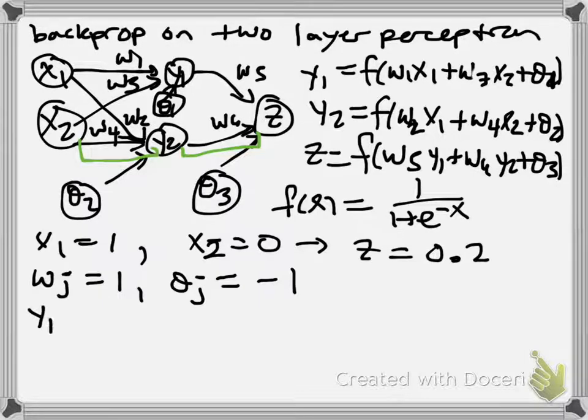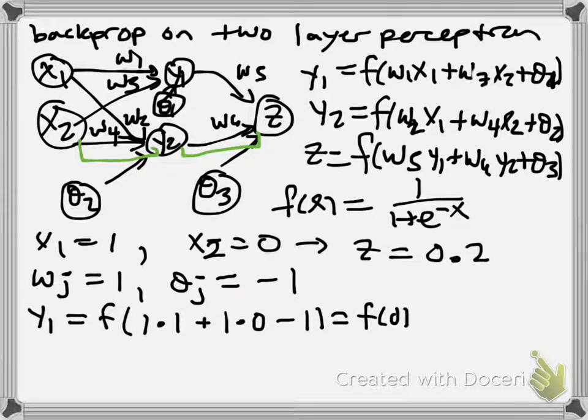So the first thing we'll do is just forward propagate in order to see what our current error is. So in this case, we have f of just 1 times 1, plus 1 times 0, minus 1. That's going to give us f of 0, which is going to be 1 over 1 plus e to the minus 0, which is just a half or 0.5.